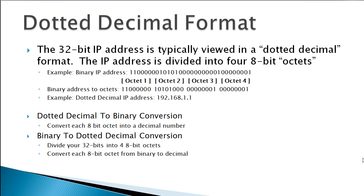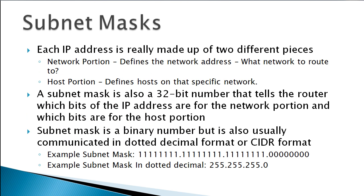If you don't know how to convert binary to decimal, check out my video on binary to decimal conversions posted earlier on YouTube. To go decimal to binary, you take your octets, write each one out as an 8-bit number, and put them all together to get your 32-bit binary address. For binary to decimal, you split your 32-bit number into four 8-bit chunks and individually convert each octet from binary to decimal.